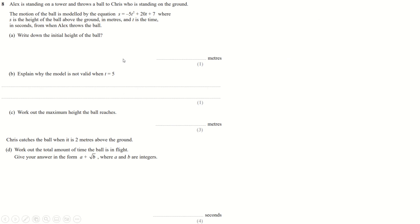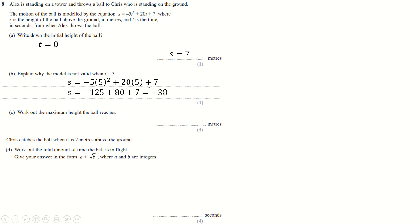Question eight — interesting that they've put some mechanics in here. The motion of a ball is given by this equation. What's the initial height? The initial height is just when t equals 0, so you put t equals 0 into this and get s equals seven, so the answer is seven. It's not valid when t equals 5, because putting t equals 5 in gives you minus 125, which makes the whole thing negative — meaning the ball would be underground. Since height zero is the floor and it can't go through the floor, the model just stops working the moment it hits the floor.